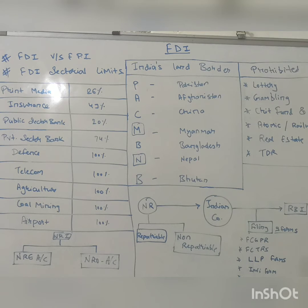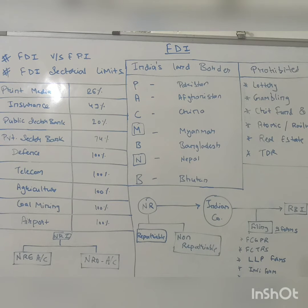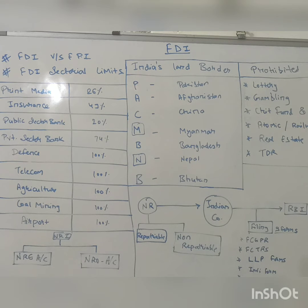FPI is something taken for stock market purposes. Suppose I am a small buyer and I want to invest in Infosys or Wipro or Alliance — my interest is not substantial in those entities. In the same manner, investment in Indian companies with an interest in short-term profit making is termed as FPI.